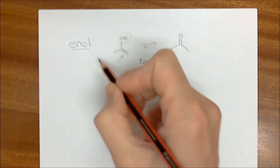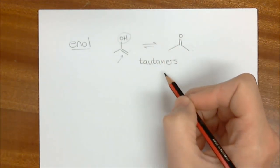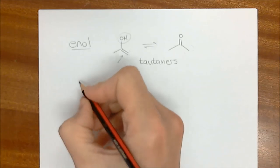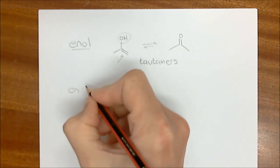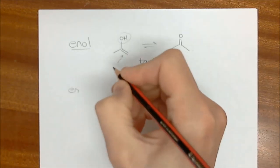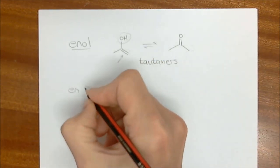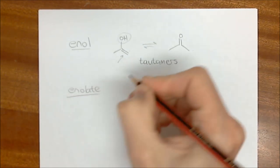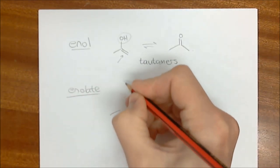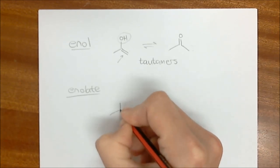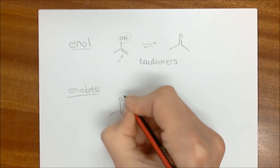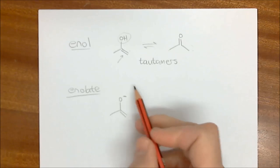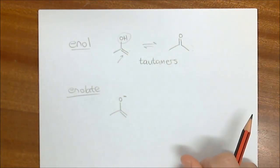We will look at enols as being used as nucleophiles, but by far the most important structure is the enolate. An enolate is almost the same as this — it's just not the OH. We have an O⁻ over there. This is your quintessential enolate.